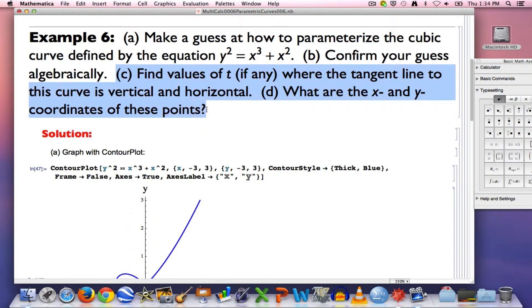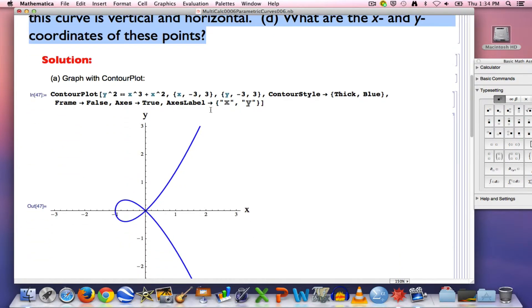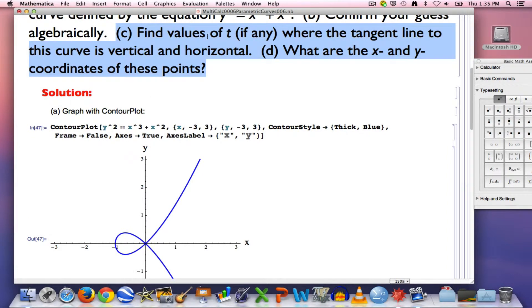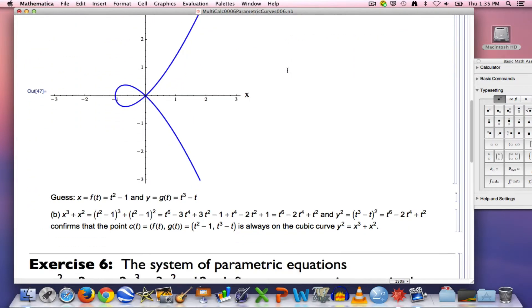Next, we want to find values of t if any where the tangent line to this curve is vertical and where it's horizontal. You can see there are such points. One right here where it's vertical and you can guess what the point is. x is negative one, y is zero. And then two right here and here where the tangent line is horizontal. It's unclear exactly what those points are. First, figure out where those are in terms of t. Then ultimately figure out what the x and y coordinates of those points are.